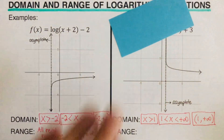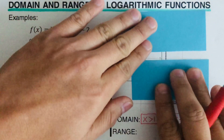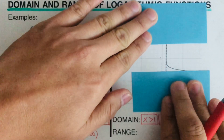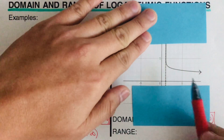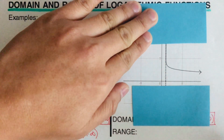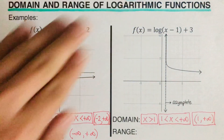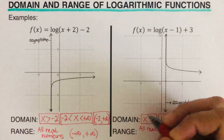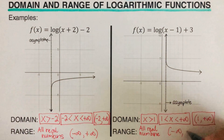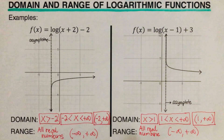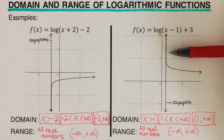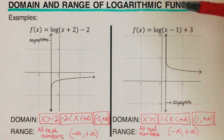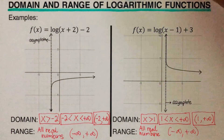For the range, it's the lowermost and the uppermost boundary. Tracing the graph, it goes all the way to infinity directed downward, and it's also directed upward all the way to infinity. So the range would be all real numbers, written in interval notation as parenthesis negative infinity, positive infinity — it goes to positive infinity upward and negative infinity downward.